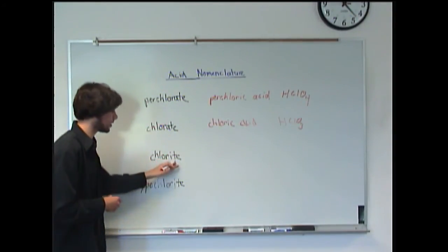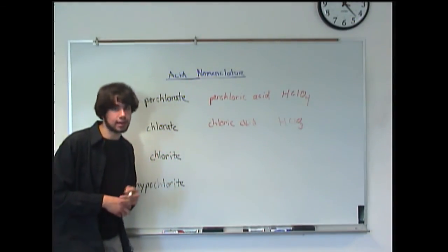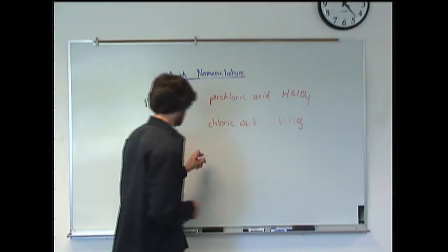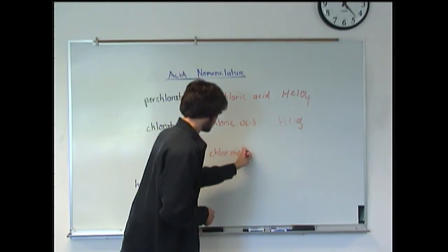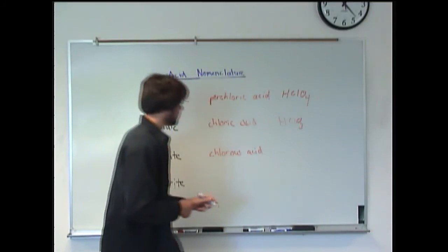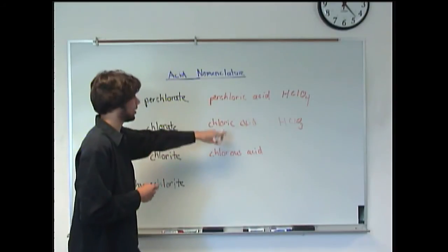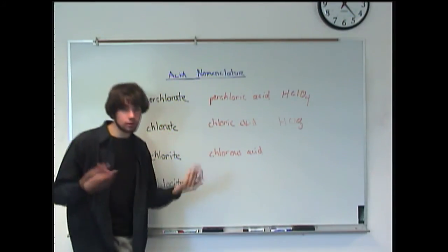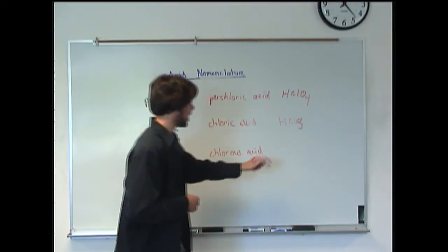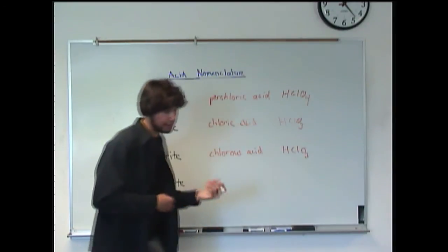Now we are to chlorite. ITE. So that means we are going to have to add the OUS ending for an acid. So it's going to become chlorous acid. You can kind of notice the pattern here. Even though it looks really complicated and they are so similar you can notice the difference. The IC always goes to ATE. The OUS always goes to ITE. So you can notice the pattern there. So chlorous acid is going to look like this, HClO2.